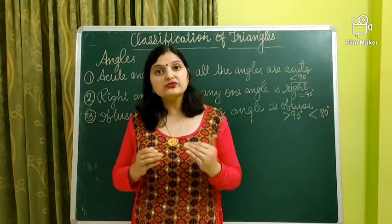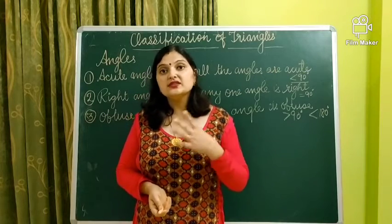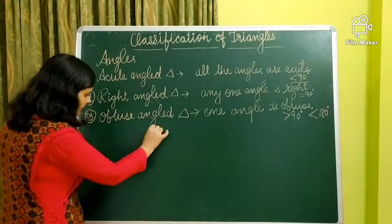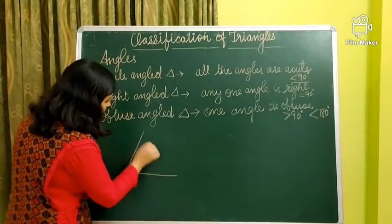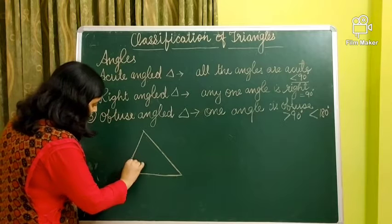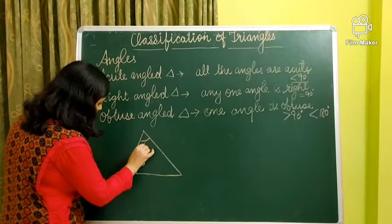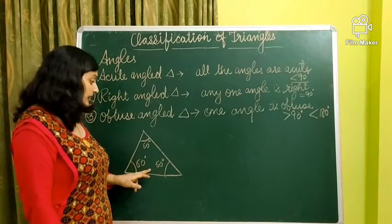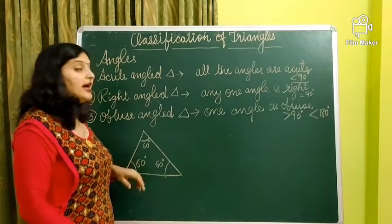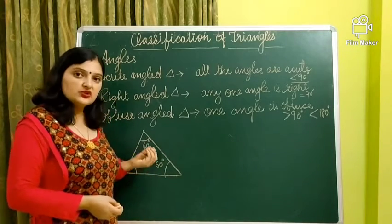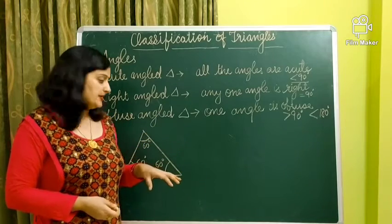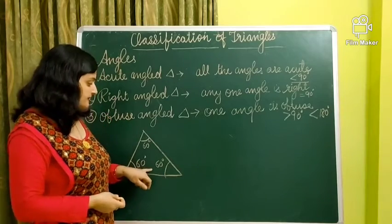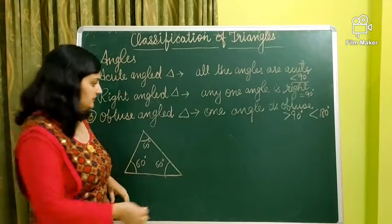Now, given a figure, you can identify which type of triangle it is. For example, I am going to make a triangle here. Suppose this is a triangle and I have written 60°, 60°, and 60° for all the angles. So all the angles are acute angles. We can say that this is an acute angled triangle.